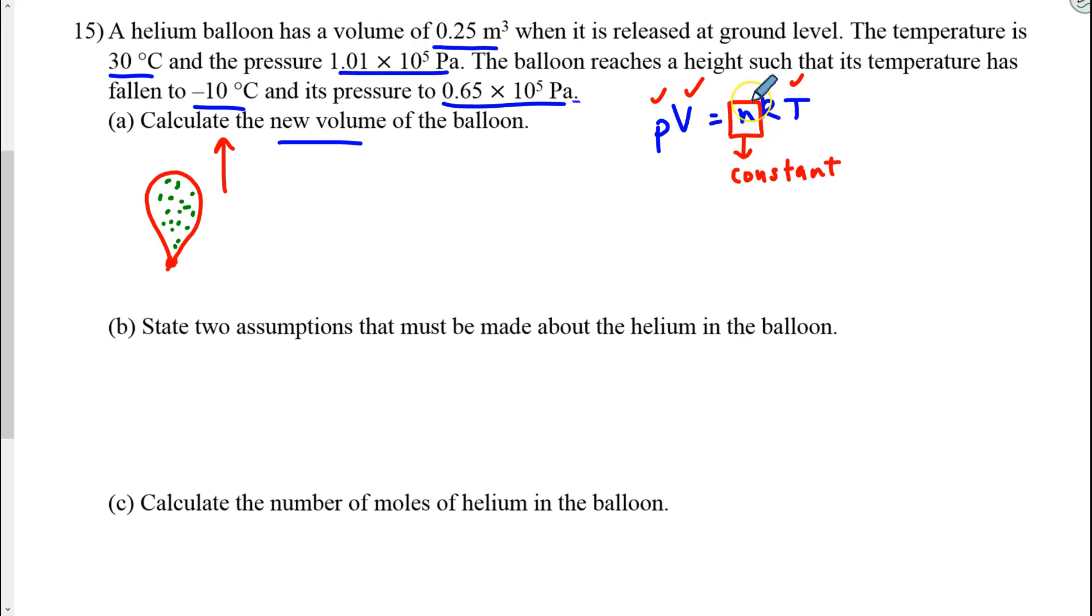We can isolate n to get PV over RT. So the initial P times the initial volume over R and the initial temperature is equal to n, but it's the same n the whole time. So the final values also yield the exact same n.